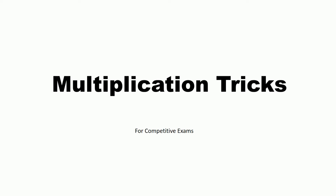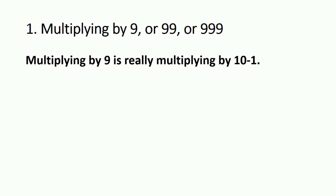In a competitive exam, the more time you save the more score you can get, because time is an important factor. In this video I'm going to discuss multiplication tricks you can use in your exam to save time — this trick will help you do multiplication in just five seconds. Multiplying any number with 9, 99, or 999 is very easy. Multiplying by 9 really means multiplying by 10 minus 1, and multiplication by 10 is very easy — just add a 0 at the end.